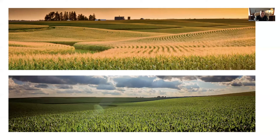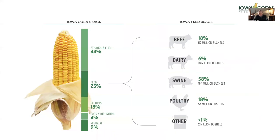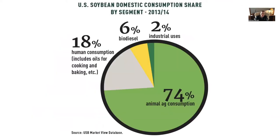These monoculture landscapes offer no forage for honeybees or monarch butterflies. Of all this corn produced, 44% ends up in gas tanks and a quarter is fed to animals — many of which could be eating grass on pasture — while only 4% is for human consumption. Similarly, 74% of soybeans are fed to animals and only 18% is for human consumption, primarily as vegetable oils for deep frying foods.